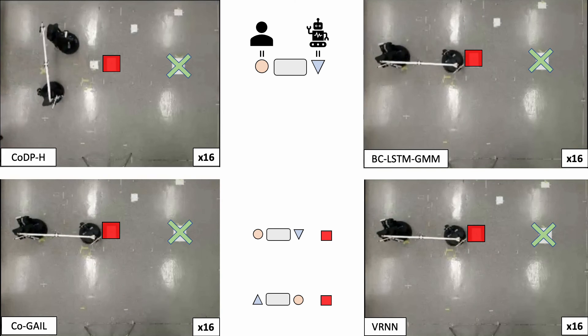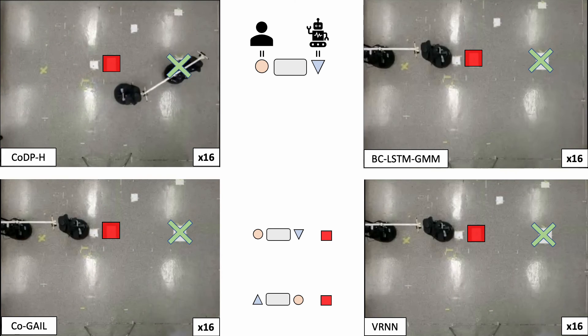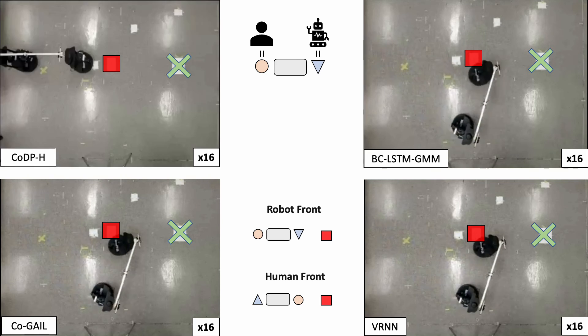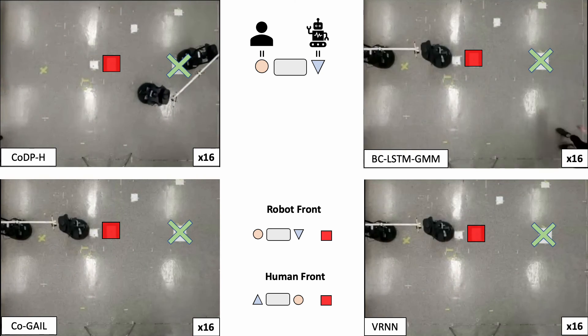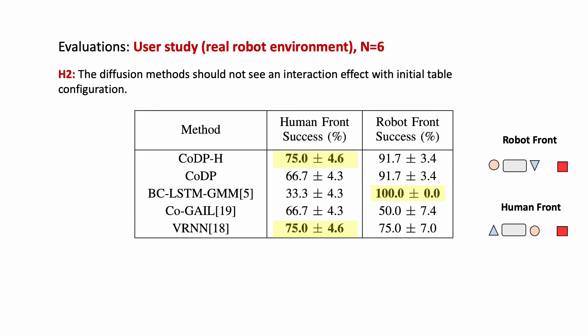Next, we tested on a real robot setting where the table is set with two initial configurations, one with the robot in front of the obstacle and the other with the human in front. In the second user study, we verified that all methods except BCLSTM GMM do not experience a significant interaction effect with the initial configuration of the robot, supporting our hypothesis.